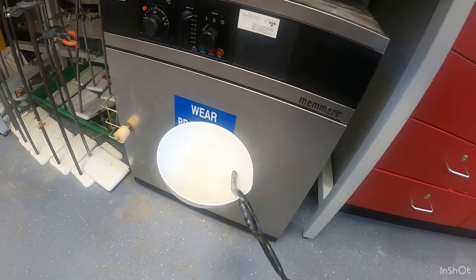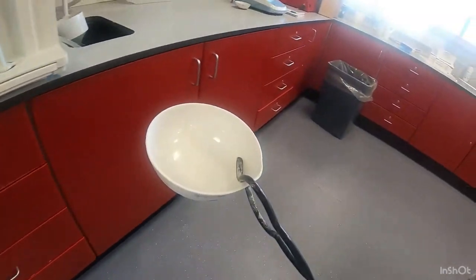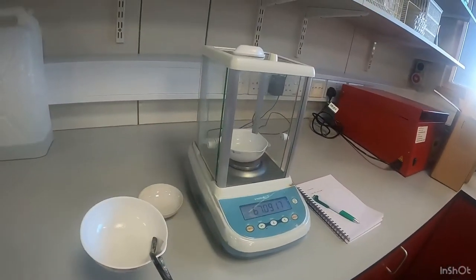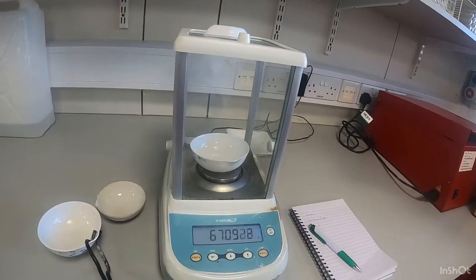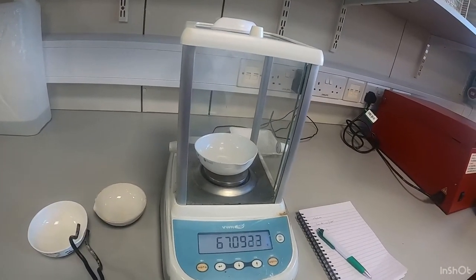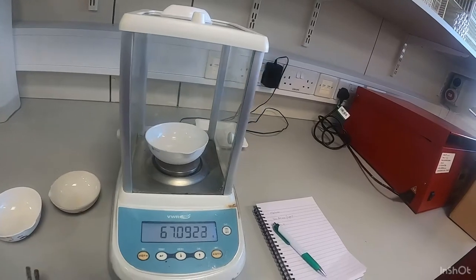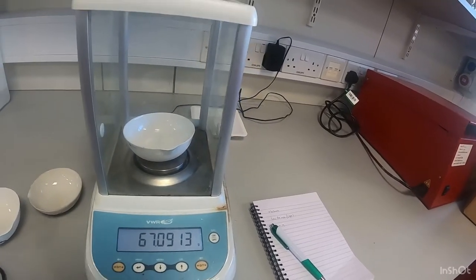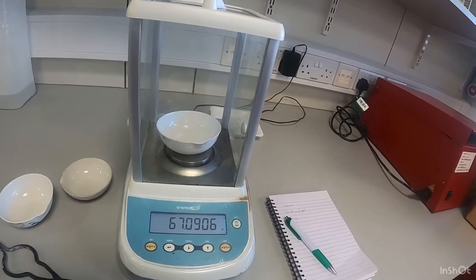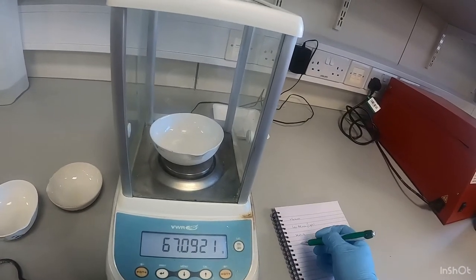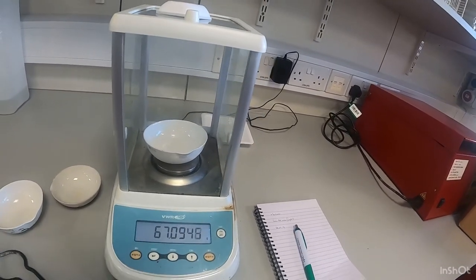So once the hour is up remove the evaporating dishes from the oven and bring them over to the analytical balance, the one that you used in the beginning. Weigh your evaporating dishes, record your results and work on your calculations.